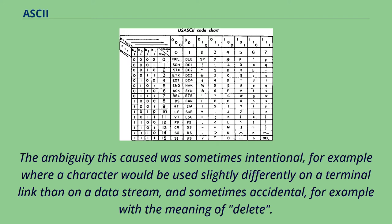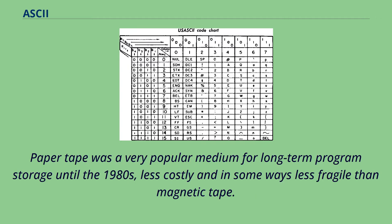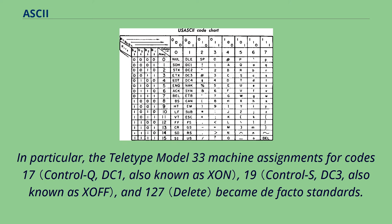The ambiguity this caused was sometimes intentional — for example where a character would be used slightly differently on a terminal link than on a data stream — and sometimes accidental, for example with the meaning of delete. Probably the most influential single device on the interpretation of these characters was the Teletype Model 33 ASR, which was a printing terminal with an available paper-tape reader/punch option. Paper tape was a very popular medium for long-term program storage until the 1980s, less costly and in some ways less fragile than magnetic tape. The Teletype Model 33 machine assignments for codes 17, 19, and 127 became de facto standards.